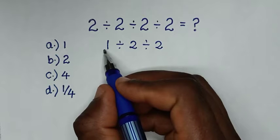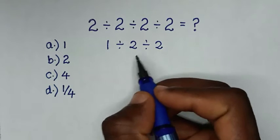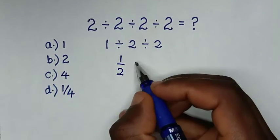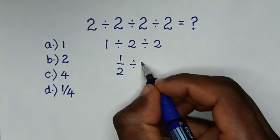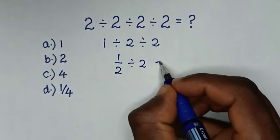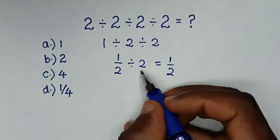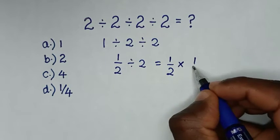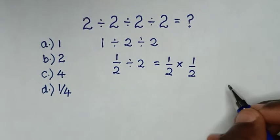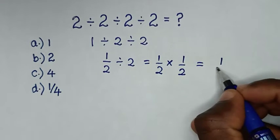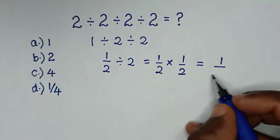We deal with the first division: 1 ÷ 2 = 1/2, then ÷ 2. This equals 1/2 ÷ 2, which is the same as 1/2 × 1/2. So it equals 1 × 1 = 1, over 2 × 2 =